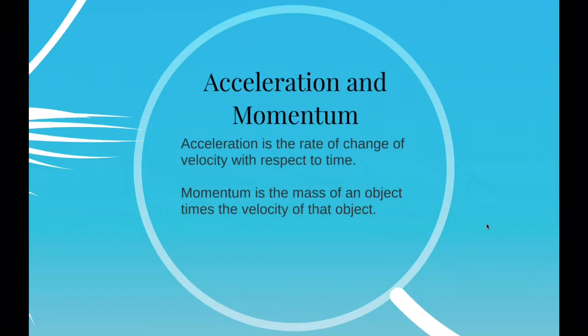Momentum can be defined as mass in motion. All objects have mass, so if an object is moving then it has momentum. The amount of momentum that an object has is dependent on two variables: how much stuff is moving and how fast the stuff is moving.